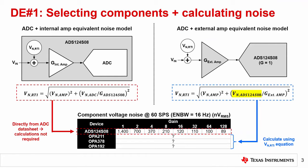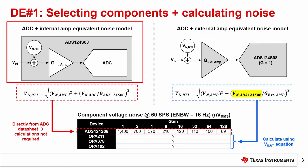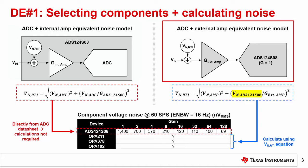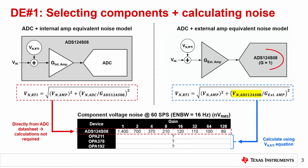For this example, let's select the ADS124S08, a low-noise 24-bit Delta Sigma ADC with an integrated gain stage. An equivalent noise model for this device is shown on the left. On the right is the equivalent noise model for the external amplifier plus ADC system, where the ADC noise is just the ADS124S08 noise at a gain of 1. In each case, the ADC is the same, and the only variable is the choice of using an integrated versus external amplifier.